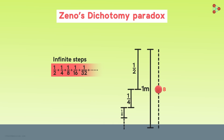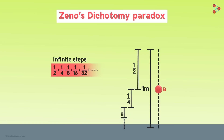As the ball falls, it has to cover half of the distance between its starting position and the floor. Then it has to cover half of the remaining distance, then the next half, and then the next half, and so on. So the number of steps the ball has to perform never ends — there are an infinite number of steps. Always remember that infinite is not a number; infinite just means something which never ends, or something that is limitless.